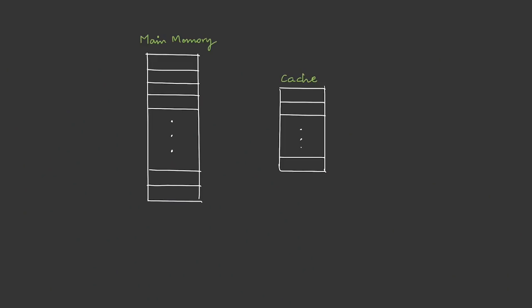The size of the cache is small compared to the main memory, therefore there should be some mechanism to fill the data in the cache. Here we'll be using mapping techniques. There are three types; the first and easiest one is direct mapping. In direct mapping, the logic is each memory block maps with exactly one cache line.